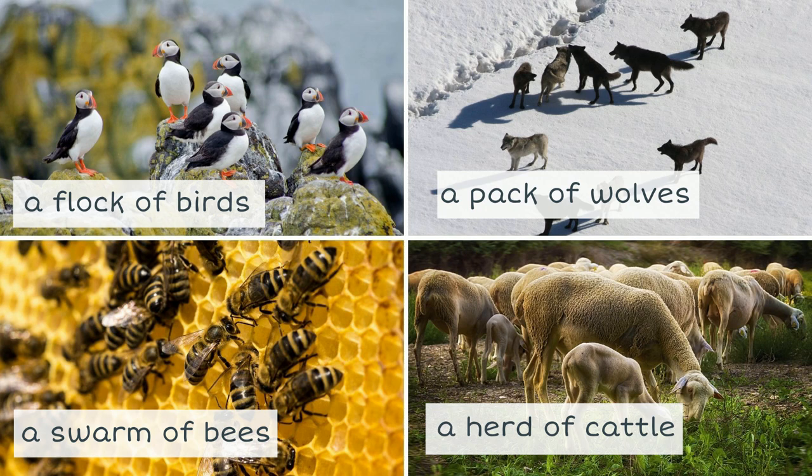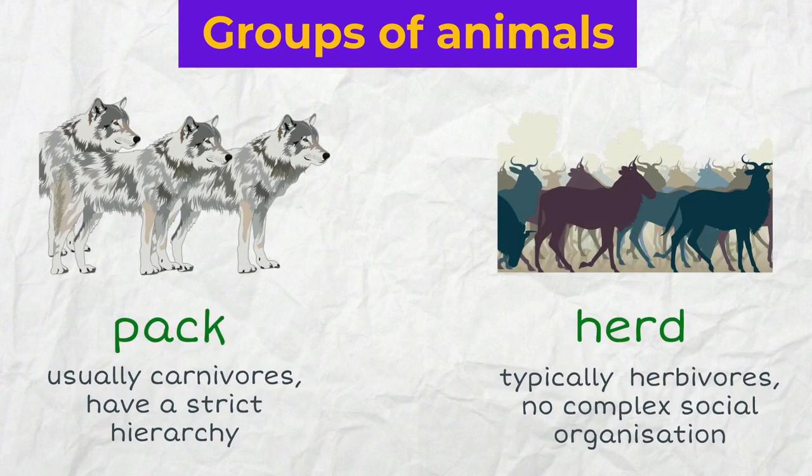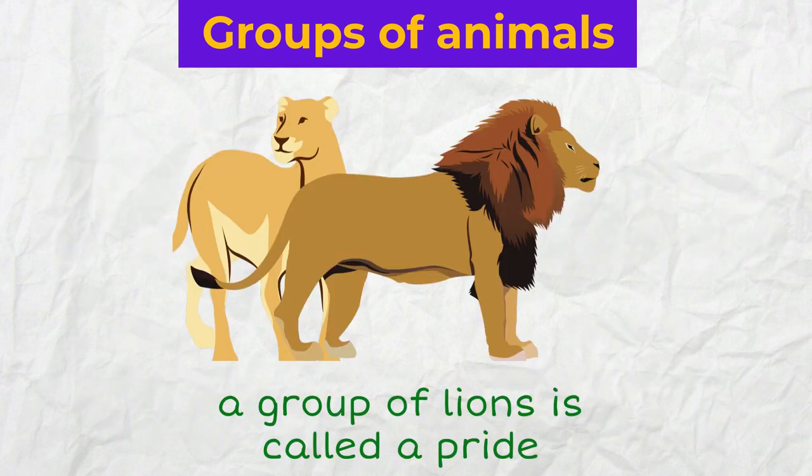What is the difference between a pack and a herd? A pack is usually made up of carnivores or predators and they have a strict hierarchy. A herd typically contains herbivores and such groups do not have a complex social organization. By the way, a group of lions is called a pride.